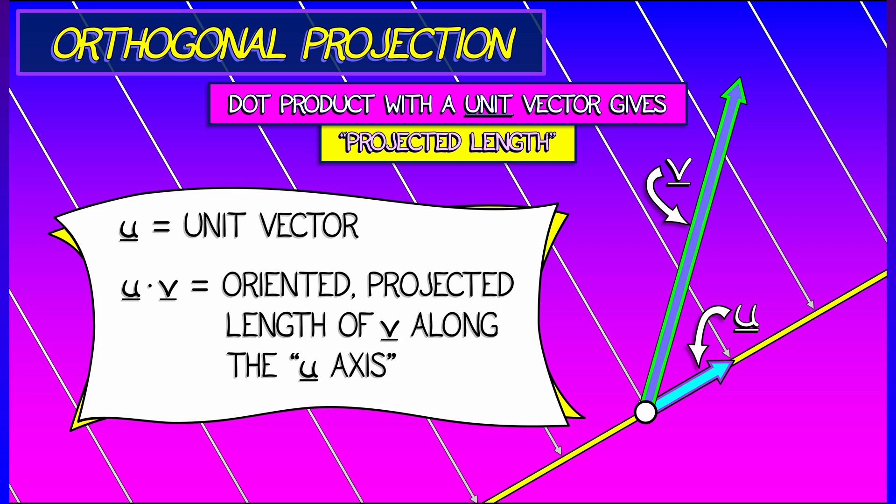So take the vector v and orthogonally project it onto that u axis. And then what I want to do is look at the length of the component along that u direction.